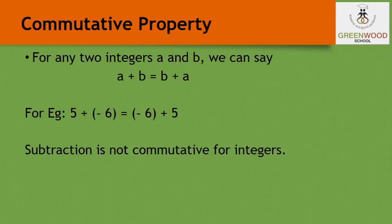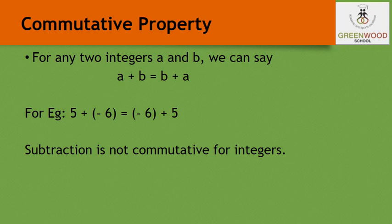Next is commutative property. For any two integers a and b, a plus b equals b plus a. That means if we add integers in any order, the answer should be the same. For example, 5 plus minus 6, or minus 6 plus 5, both give minus 1. Therefore, commutative property is applicable for addition of integers. But for subtraction, the commutative property is not applicable.